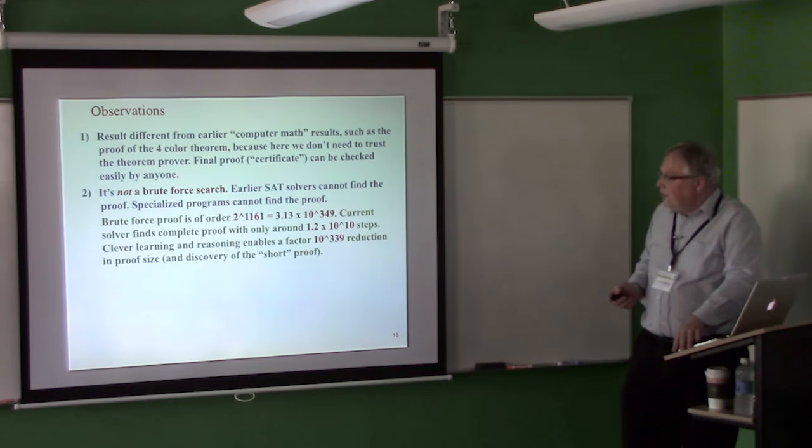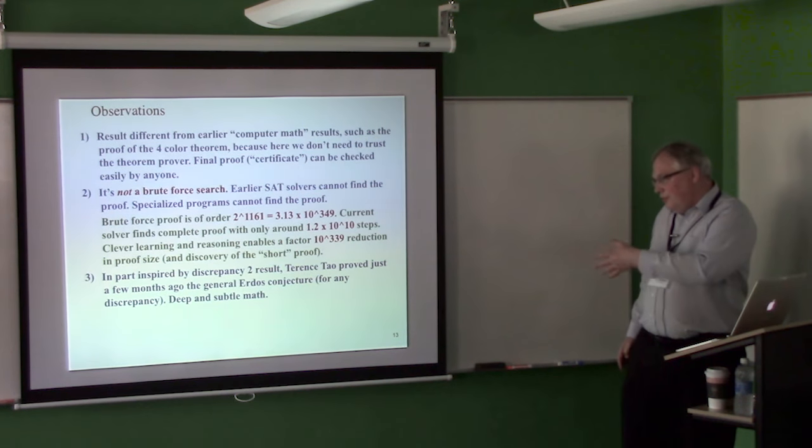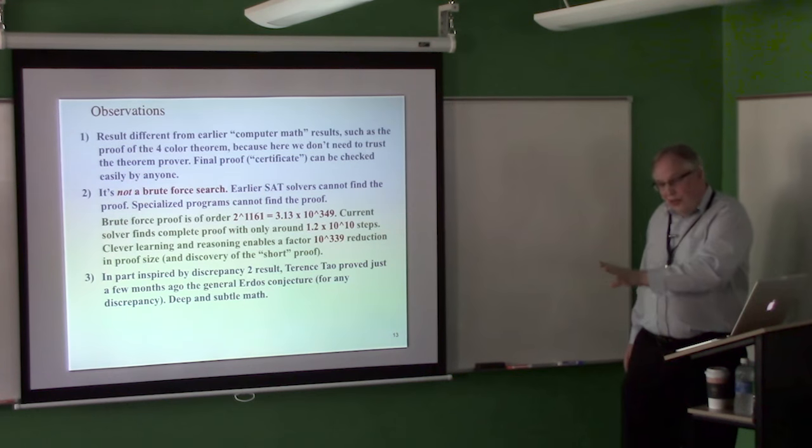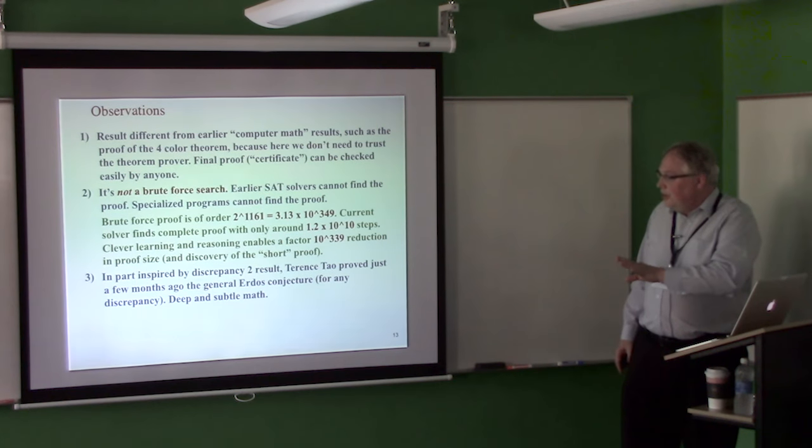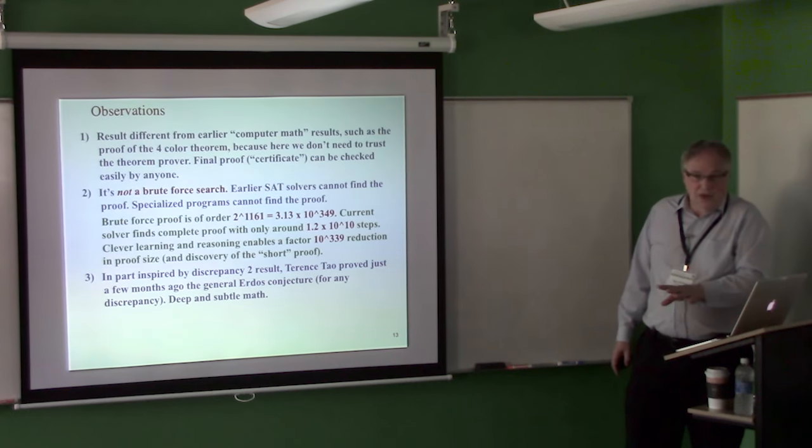The current solver, finds the complete, you can actually look at the trace at the end, it prints it out. And you'll find that it makes about 10 to the 10 little inference steps. So that's a savings of a factor 10 to the 339. So it finds a miniscule size proof compared to sort of brute force search. And it's also able to find the proof. It's not just that the proof is much shorter, it has to find it among, the search space. So that's the difference. So it's not really, it actually has smarts built in. And, we hope that they will just get better and better.